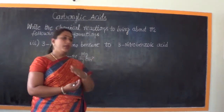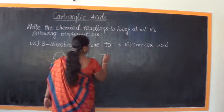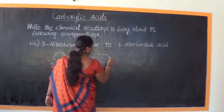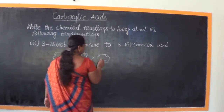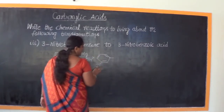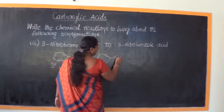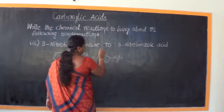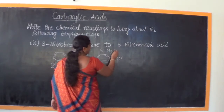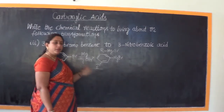The Grignard reagent has the formula R-MgBr. The nitro group remains intact — no change there. The phenyl group now has MgBr attached. So on one side is R (the aryl group), then Mg, then Br — giving us the Grignard reagent structure.